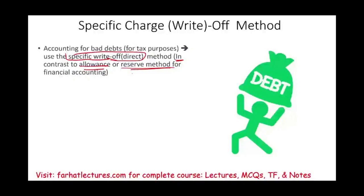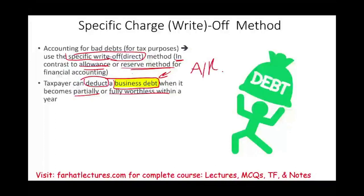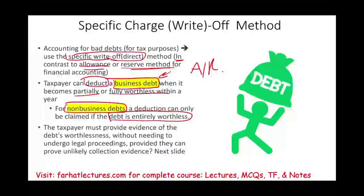Under the specific charge-off method, when can we deduct a receivable? We can deduct a business debt when it becomes partially or fully worthless. So if we cannot collect the money — or can only collect part of it — and that debt is a business debt arising from selling a product or service, we can deduct whether it's partially or fully uncollectible. For non-business personal debt, a deduction can only be claimed if the debt is entirely worthless — we must wait until it becomes completely worthless.